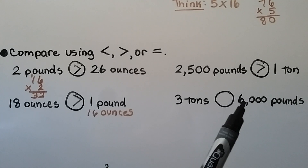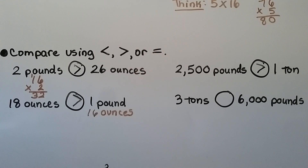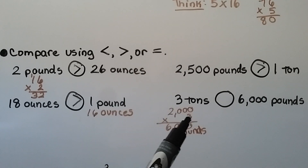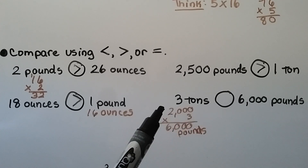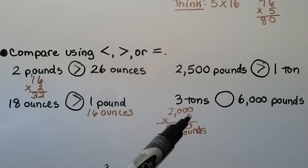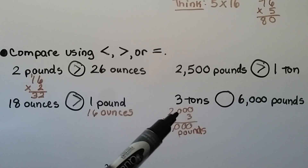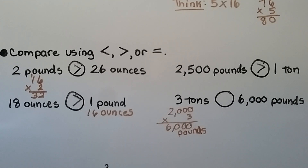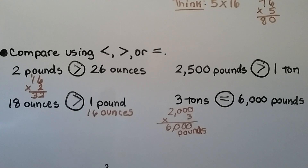Comparing three tons to 6,000 pounds: there are 2,000 pounds in a ton, so we multiply 2,000 × 3. Using the basic fact 2 × 3 = 6 and adding three zeros gives 6,000 pounds. Comparing 6,000 pounds to 6,000 pounds — three tons is equal to 6,000 pounds.